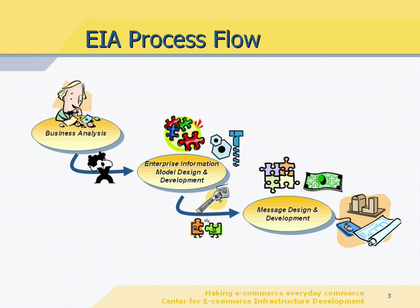Here is the EIA process flow. In the beginning, business information is scattered bits and pieces in the enterprise. They have to be analyzed and designed to become the enterprise information model. As you can see, EIM is just like an inventory of basic building blocks, which represent reusable information components. Using a systematic methodology, we can assemble these components to construct a larger piece of message or document, just like building a puzzle or constructing a house.